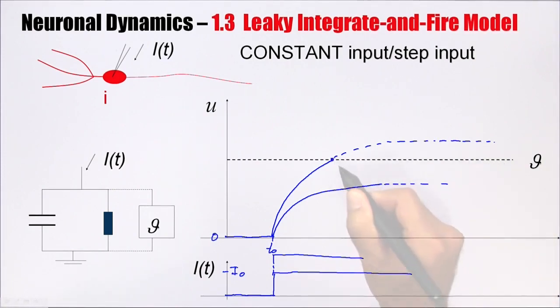But the neuron will fire at this point here. This is the moment of the output spike, and in this moment in time we reset the membrane potential to a new value which I call UR. UR can be at the resting value of zero, it can be below, it could also be above. And now the whole process starts again.